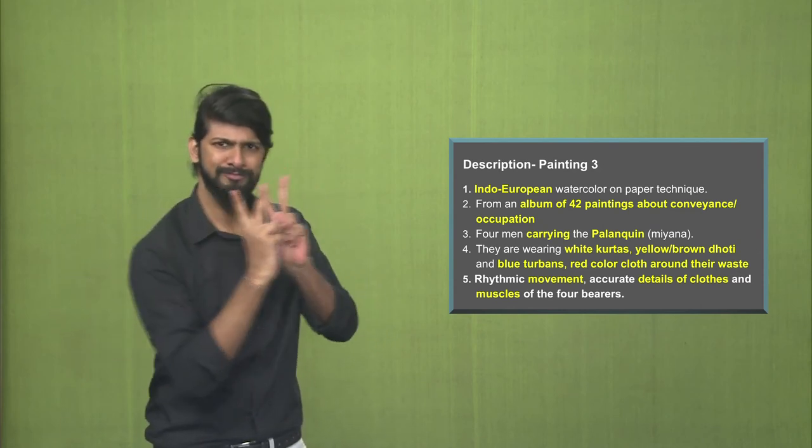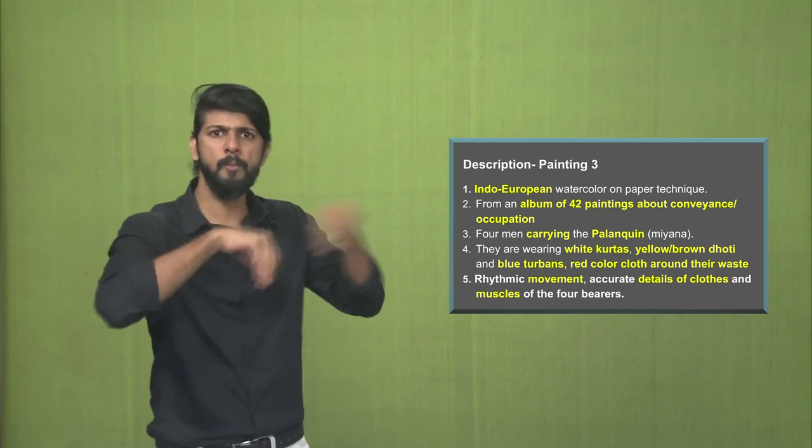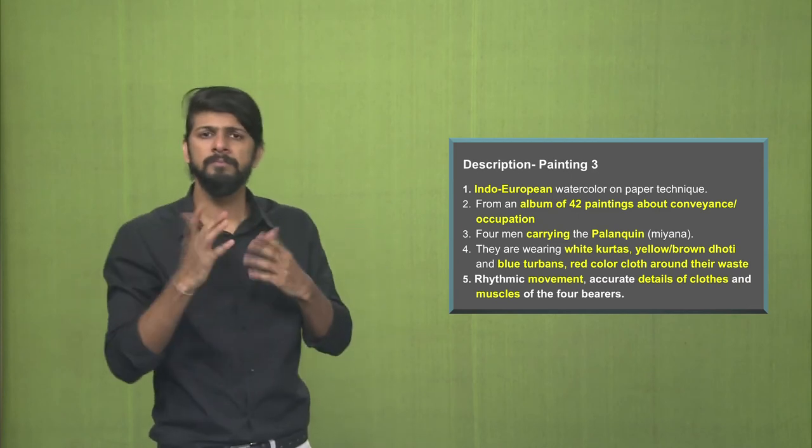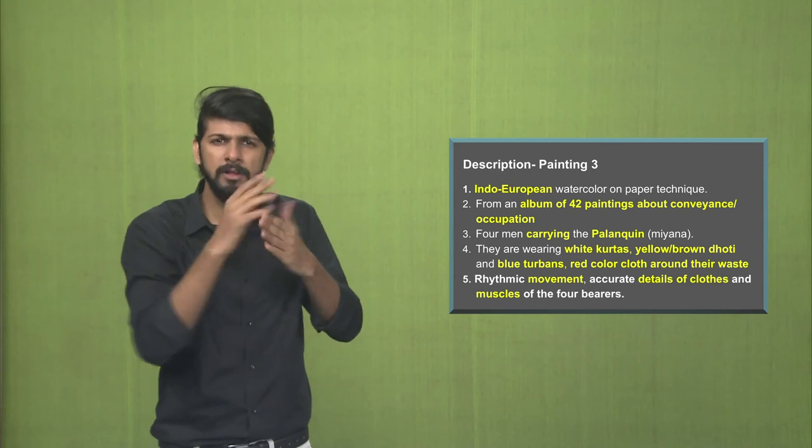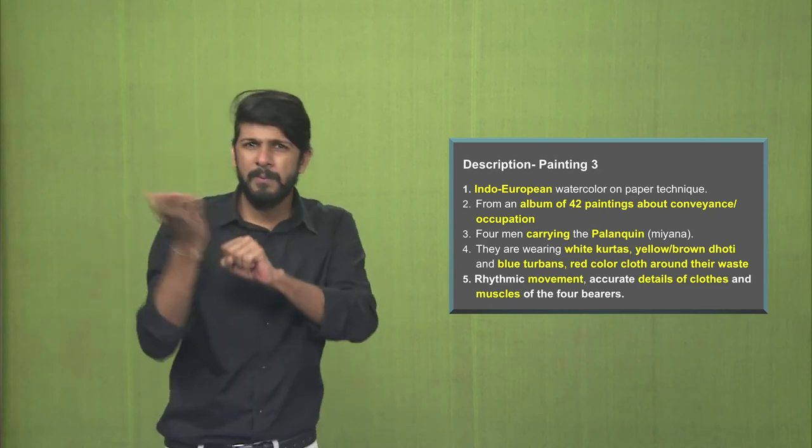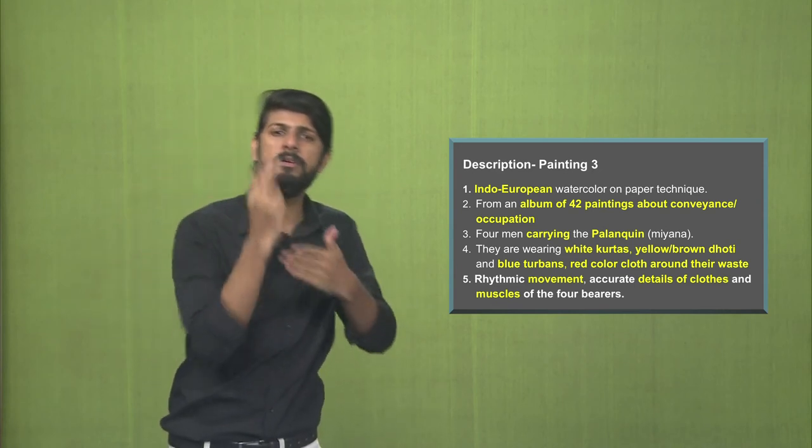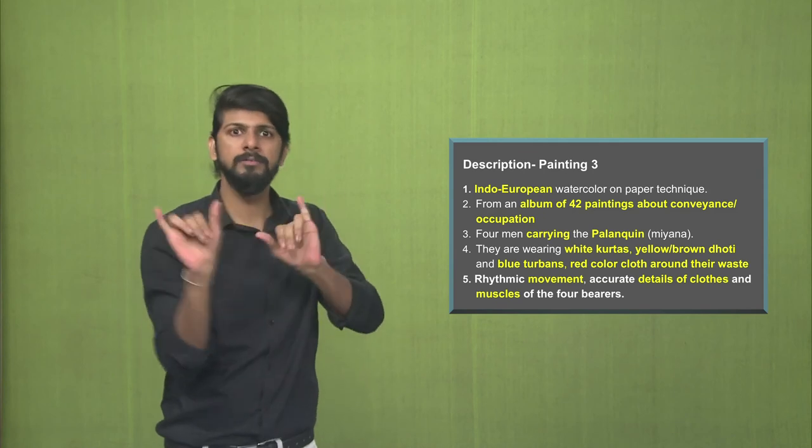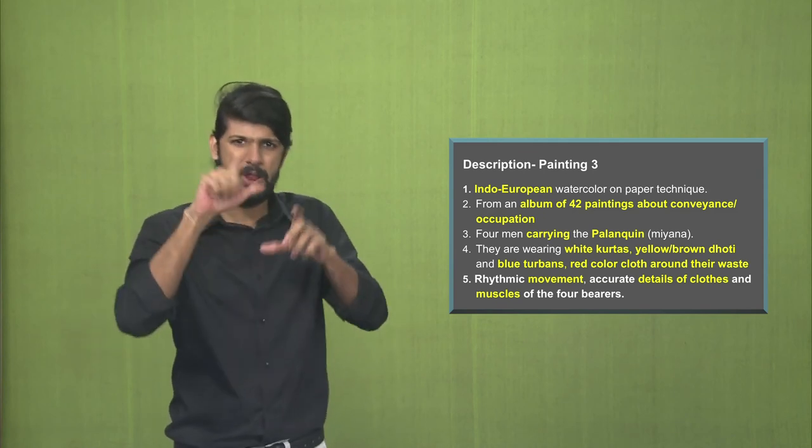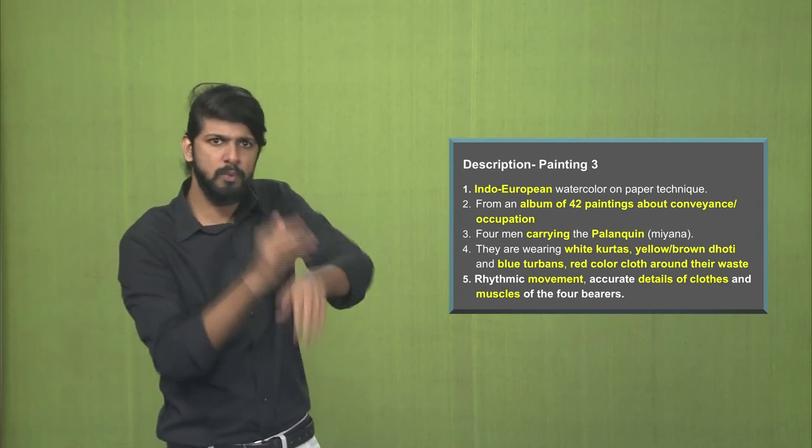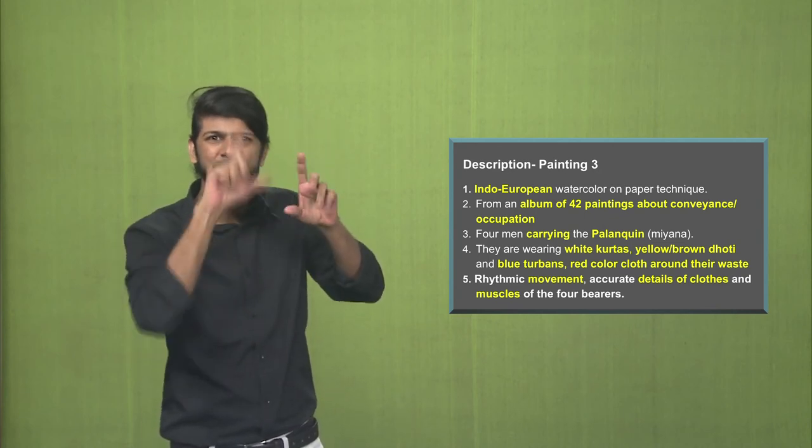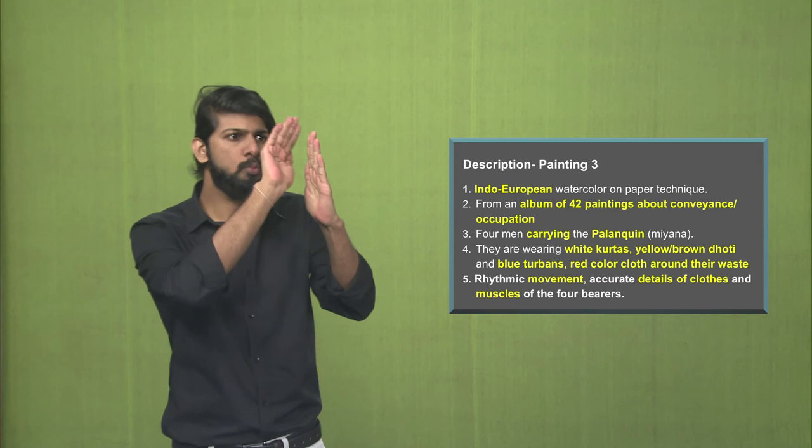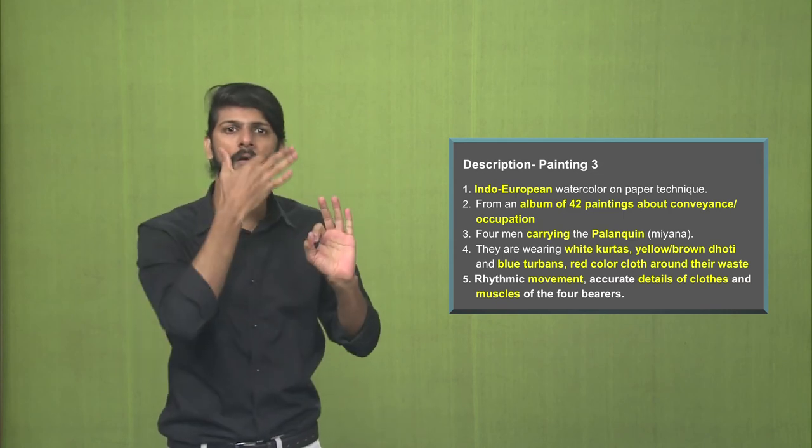You would see in the painting, very accurate depiction of the rhythmic movement as well as the details of the clothes, very original and exact. And also the muscle. You see the muscles of the four bearers has been very accurately depicted.